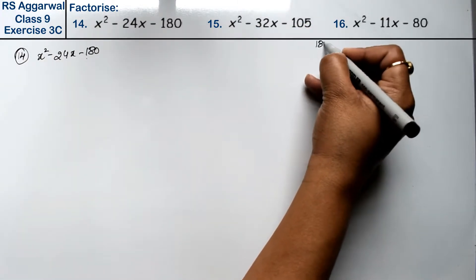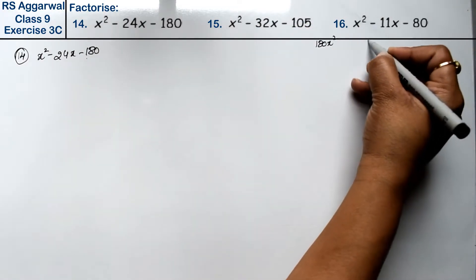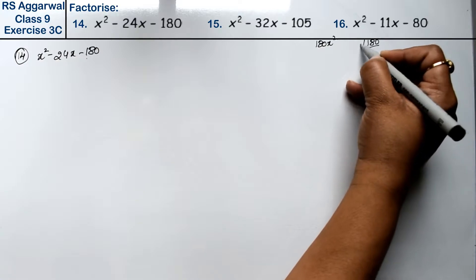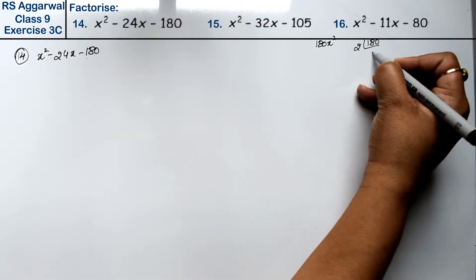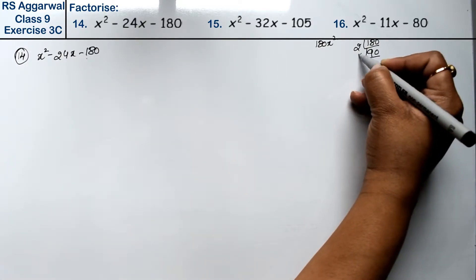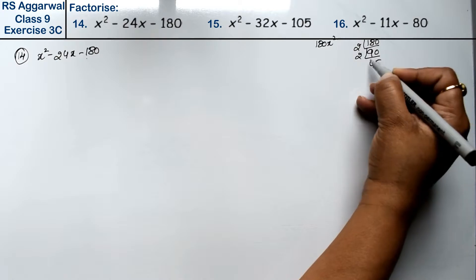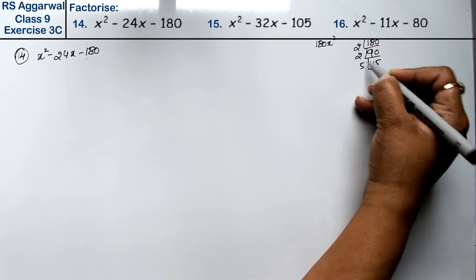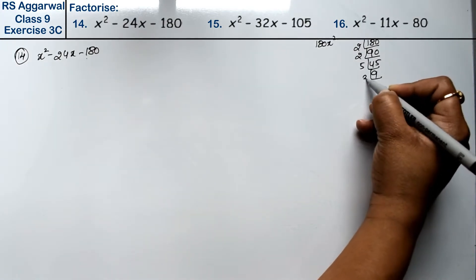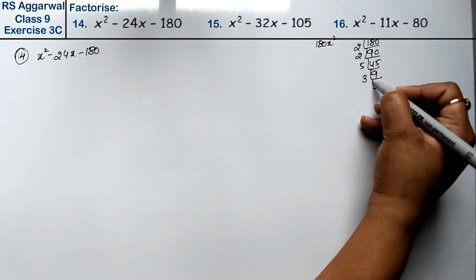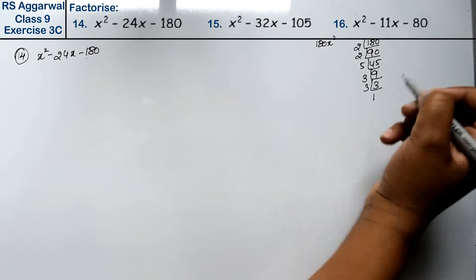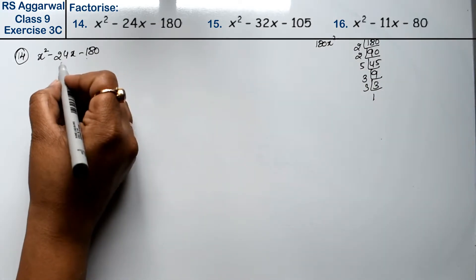Here we have 180x squared. Now, if we take out the factors of 180: 2 nines are 18, 2 into 45, 5 nines, 3 threes are 9 and 3 ones. Now, we have to make 24.